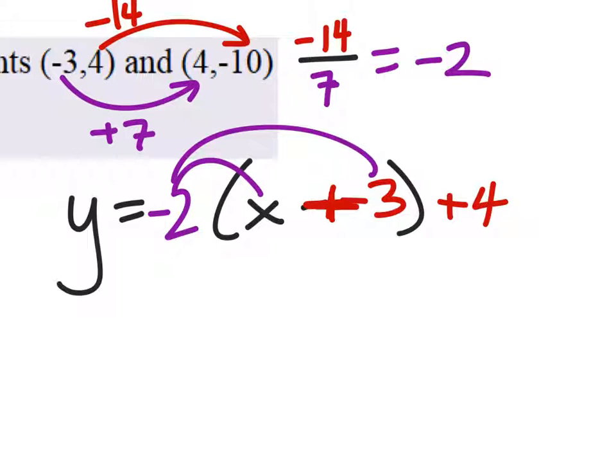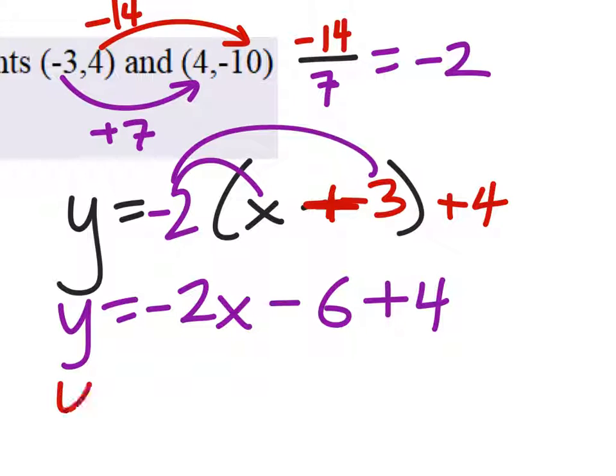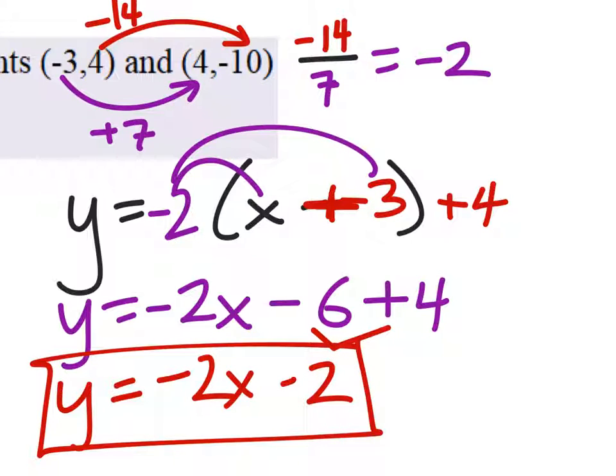Distributing the -2, we get y = -2x - 6 + 4. Combining like terms, -6 and 4 gives us -2. Any questions on this one?